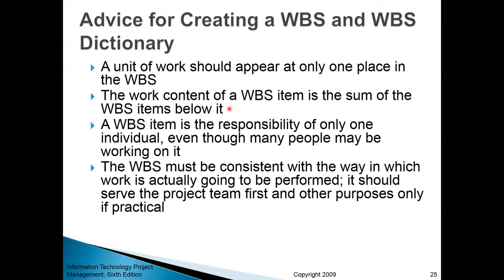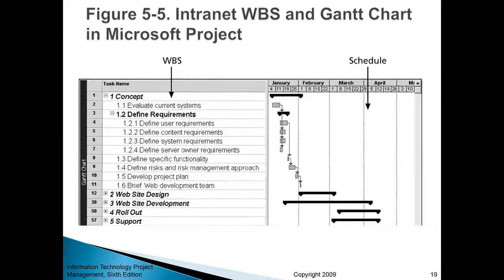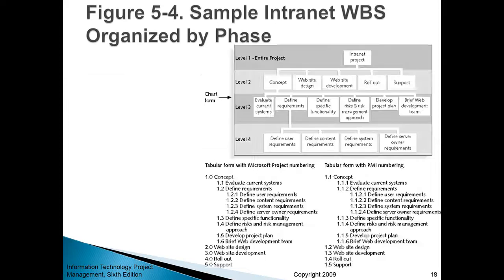The work content of a WBS item is the sum of all WBS items below it. This means that sub-items completely describe the parent item — once you deliver those sub-items, you've also accomplished the higher-level step, with nothing missing. Those sub-items are mutually exclusive — distinct and different — and collectively exhaustive, meaning they collectively describe the entire higher-order step.